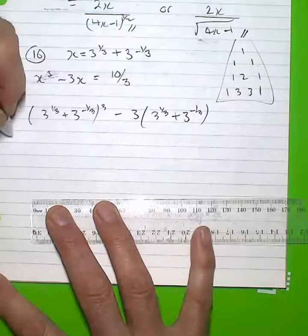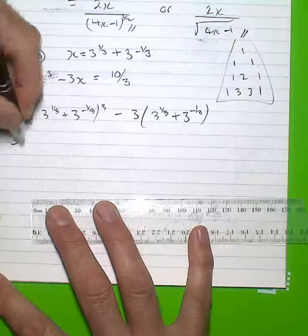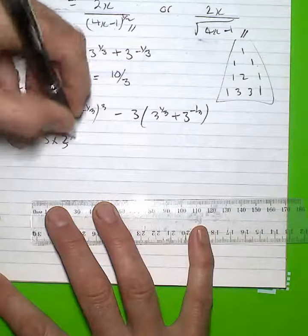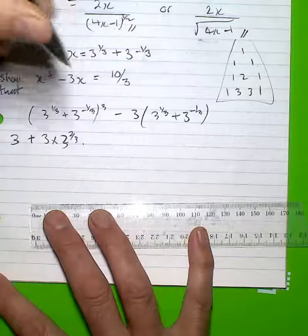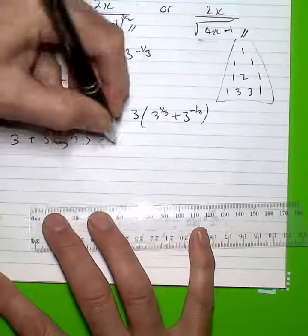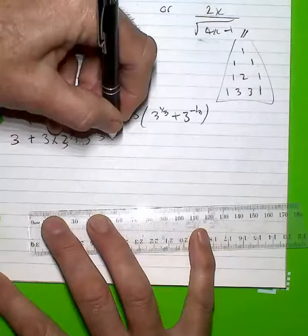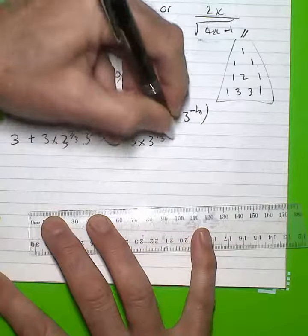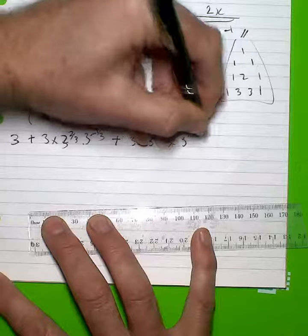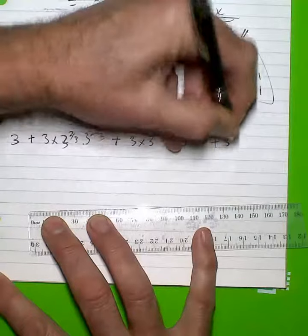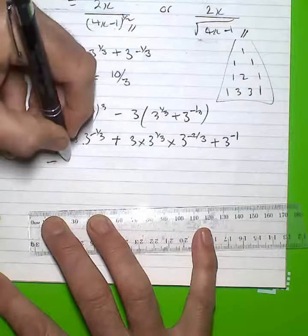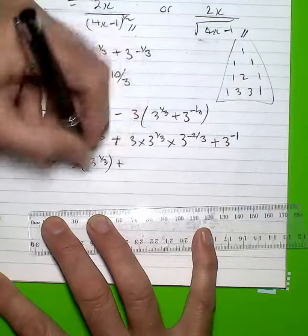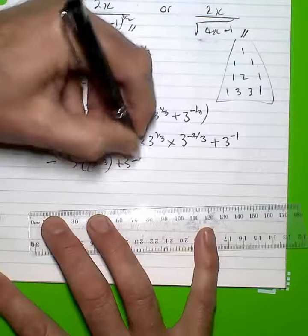And when I expand that, I get 3 plus 3 by 2, 3 to the 2 thirds times 3 to the minus 1 third, and then minus 3 lots of 3 to the 1 third plus 3 to the minus 1 third.